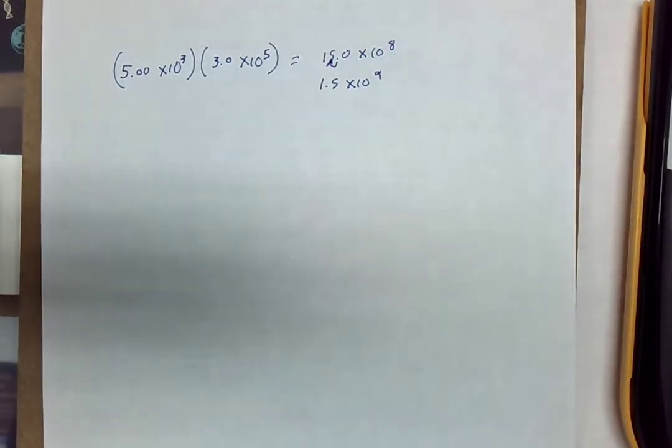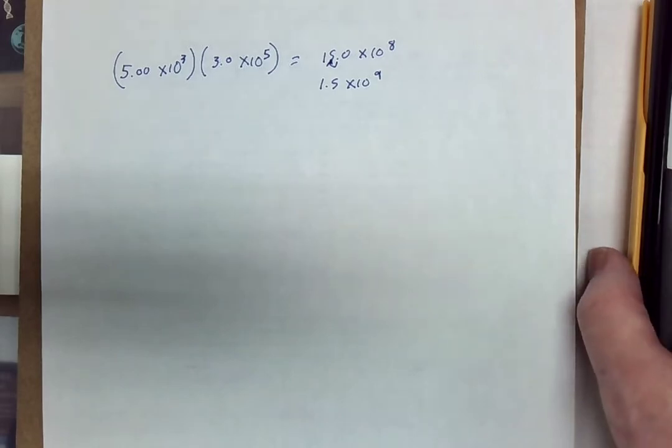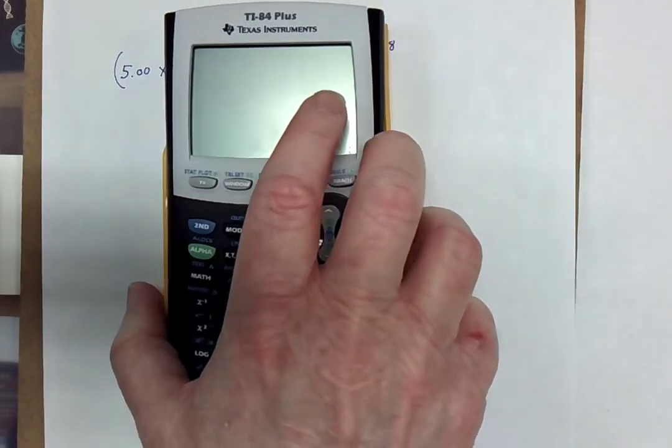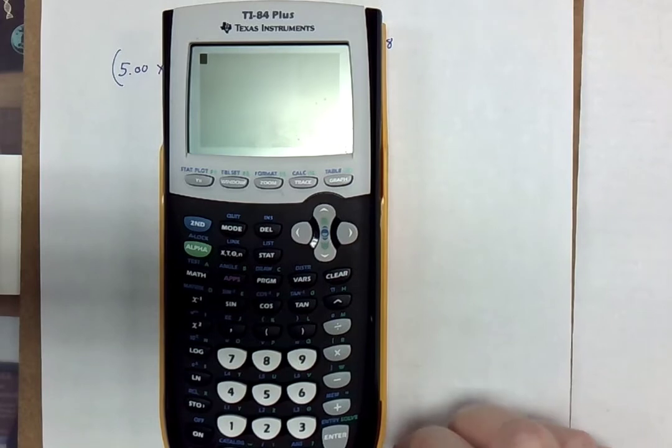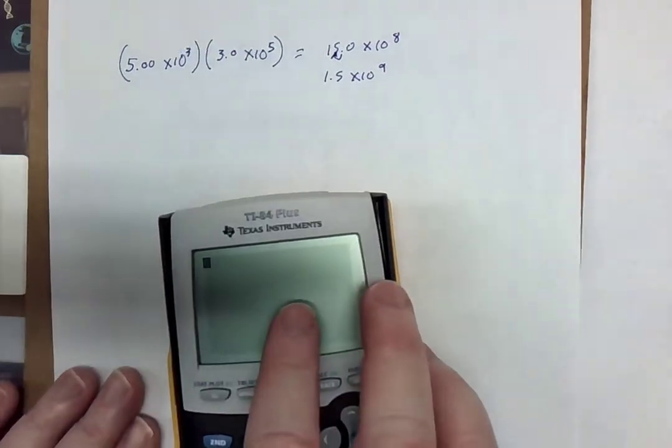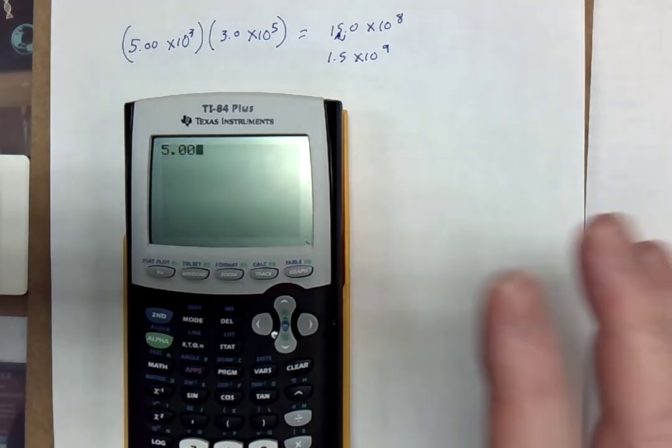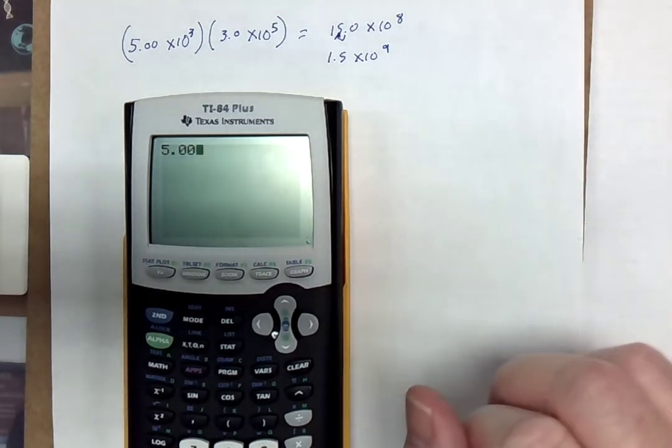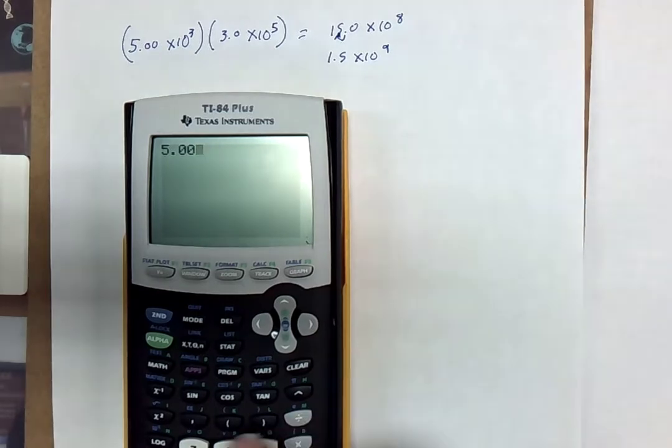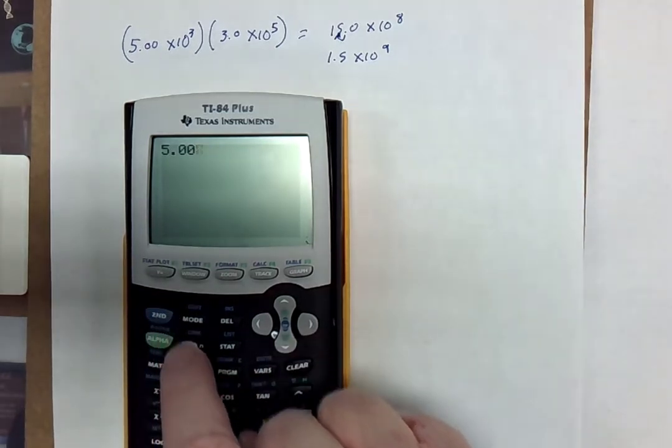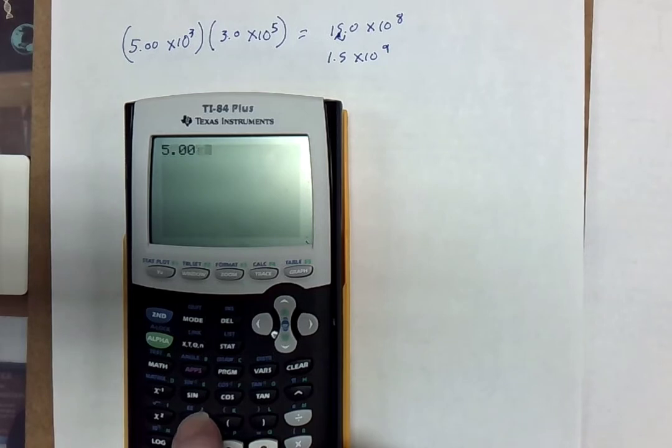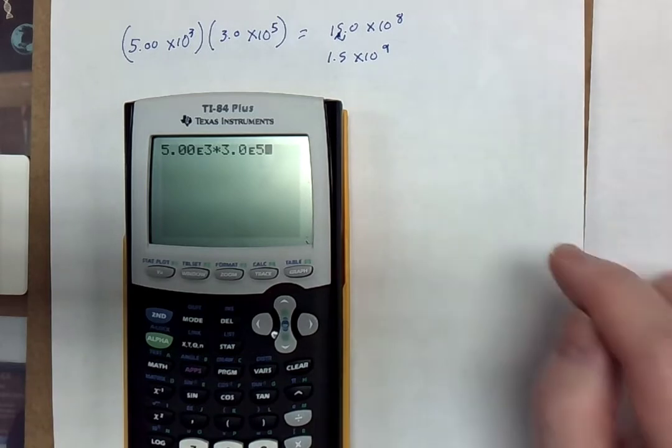Now, let's talk about different ways of actually doing that with a calculator. So, typical graphing calculator. What you're going to enter in here is 5.00, and you are not, I repeat, not going to type times 10 raised to something. You're going to go 2nd EE, and then you're going to put in the third. Then we'll multiply that by 3.0, 2nd EE raised to the fifth.